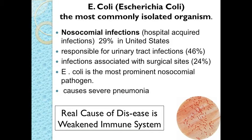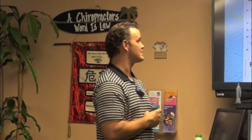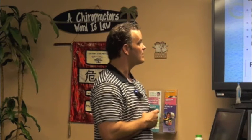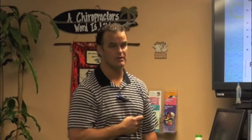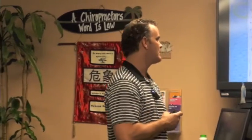E. coli — you've got nosocomial infections, which is a fancy word for you go to the hospital and you get an infection. Usually it's MRSA in the US nowadays, about 29%. Urinary tract infections — 46% are E. coli, 24% from surgical sites, and it's the most prominent nosocomial pathogen. And it causes severe pneumonia — basically your lungs fill up with fluid so you can't breathe, which is definitely not good.